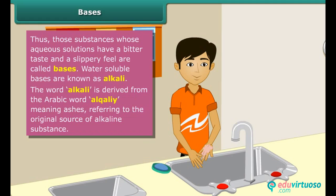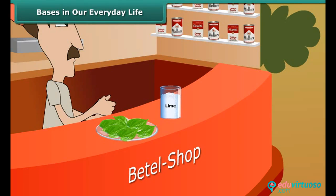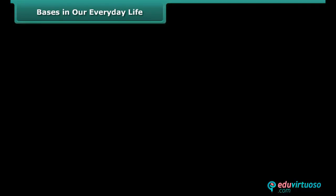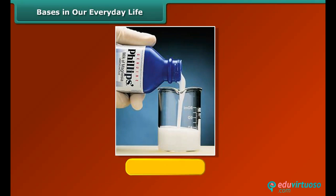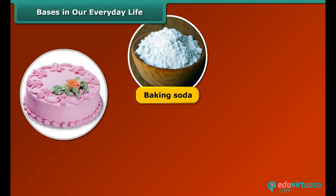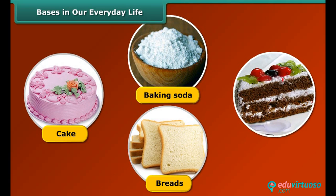The chemical name of lime is calcium hydroxide. Lime water is prepared by dissolving lime in water. Milk of magnesia is a medicine which helps us in digesting our food — it contains magnesium hydroxide, which is a base. The baking soda used in making cakes, breads, and other bakery items contains sodium hydrogen carbonate.